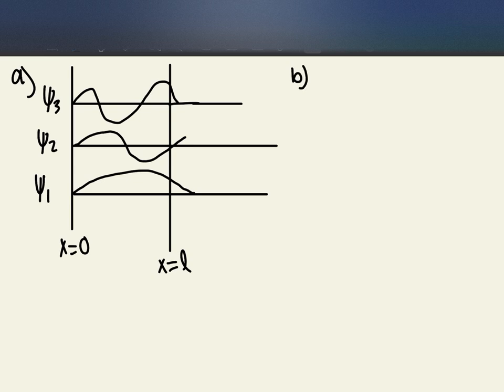For part b it wants us to figure out the form of the wave function in the ground state in the three regions that we were given. So for x is less than zero it is zero.